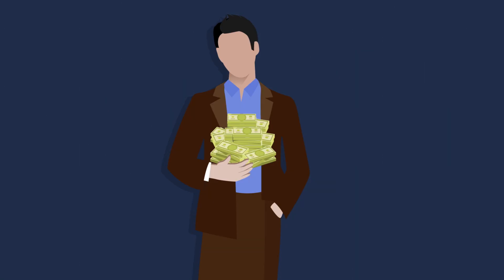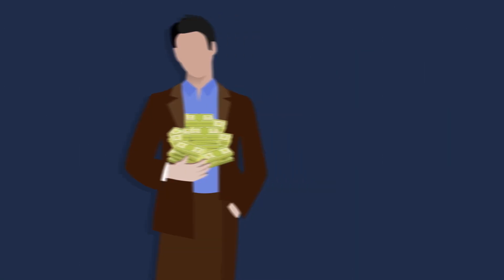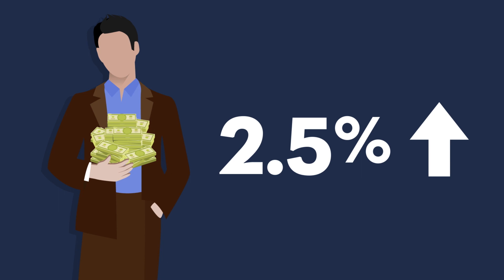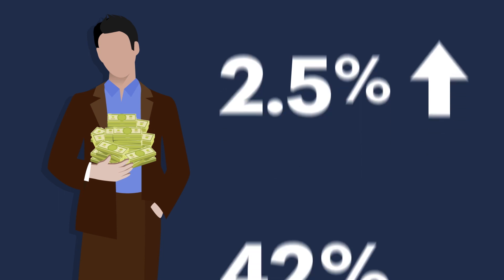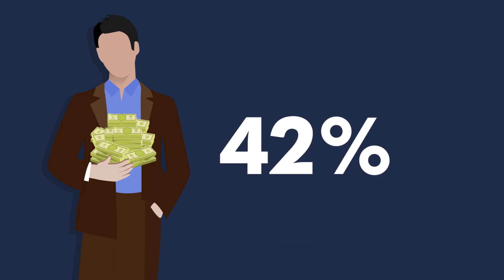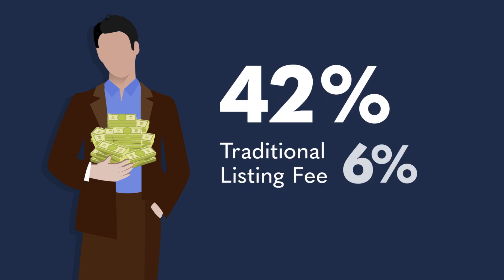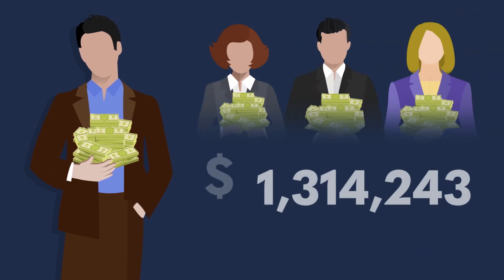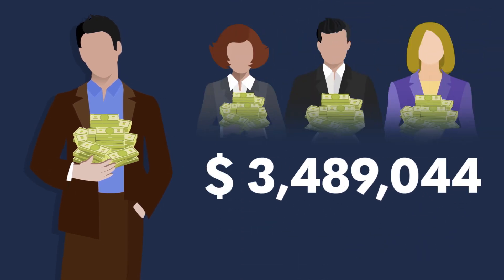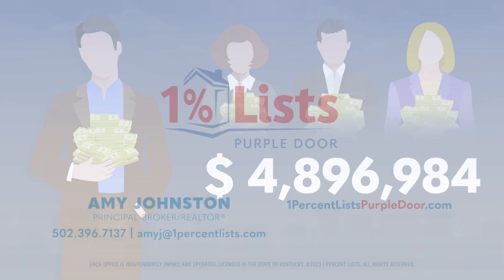Our clients are typically offering about 2.5% to a buyer's agent and are saving thousands of dollars. On average, our clients save 42% compared to a typical 6% listing fee. We have saved our clients millions of dollars in commission.